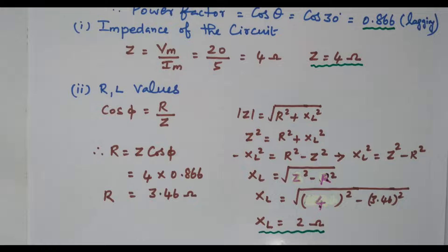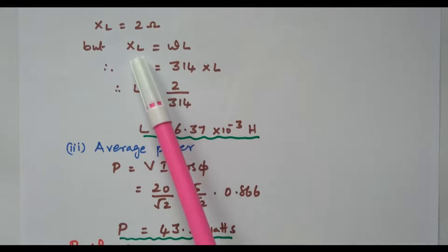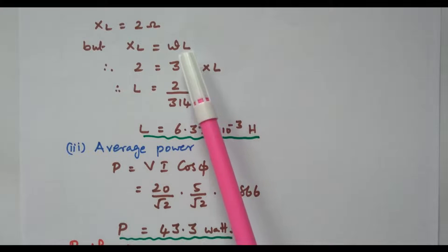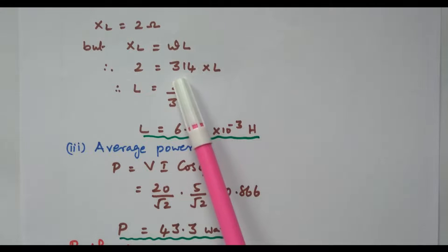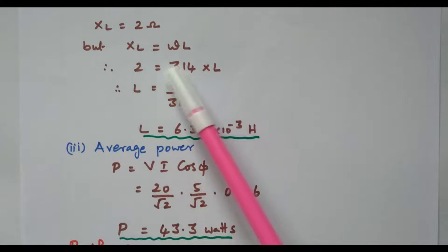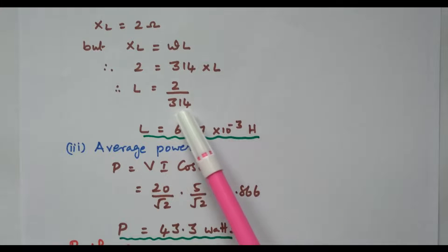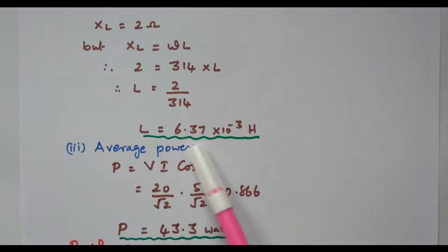From XL, we can calculate the inductance L. XL = 2 ohms, and XL = ω × L. From the voltage and current equations, ω = 314. So L = XL / ω = 2 / 314 = 6.37 × 10⁻³ Henry. The inductor value is now calculated.